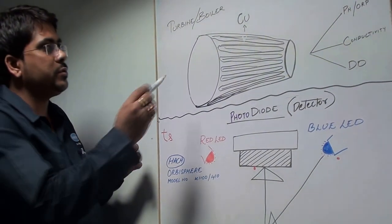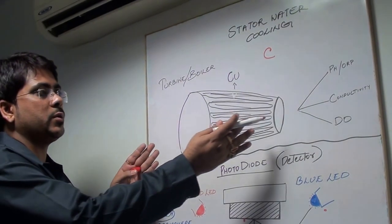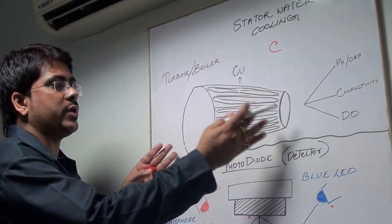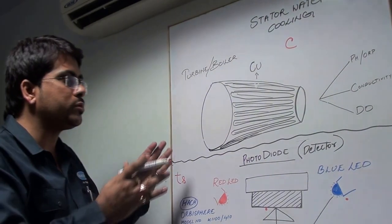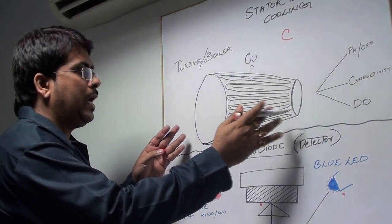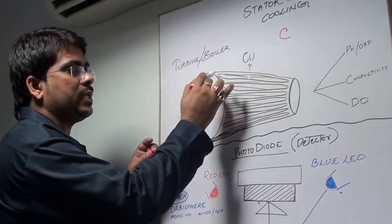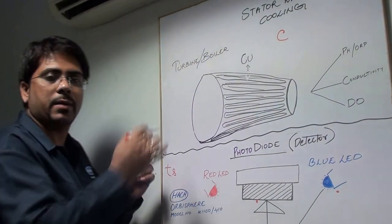As you see in this pictorial representation, this is particularly a boiler drum. In a power generating station, the most important equipment is the turbine and the boiler, and the stator windings are the most important component in this turbine.